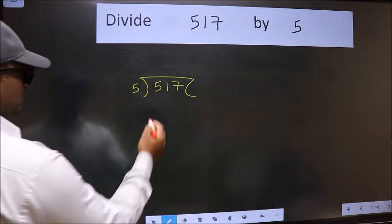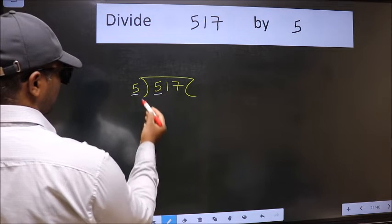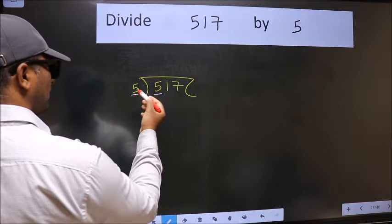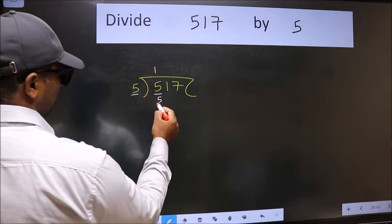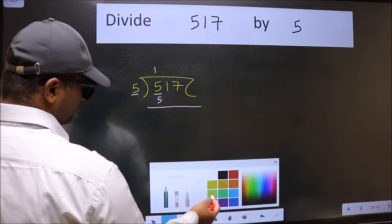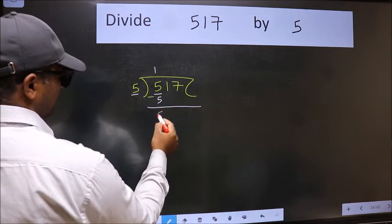Next, here we have 5 and here also 5. When do we get 5 in 5 table? 5 once 5. Now we should subtract. We get 0.